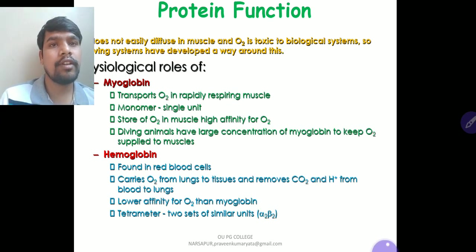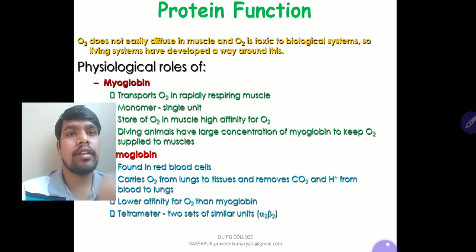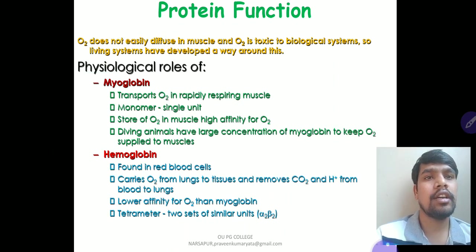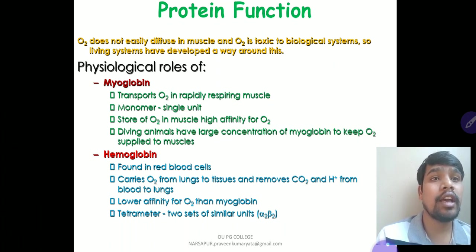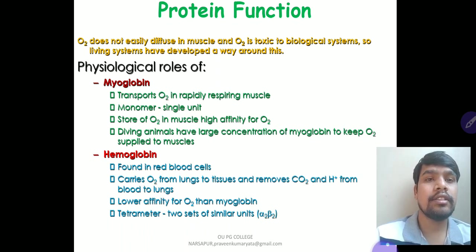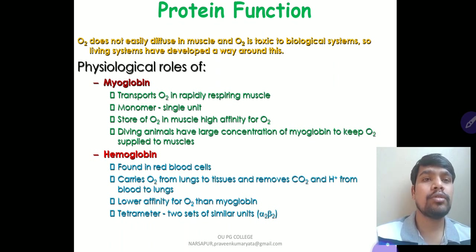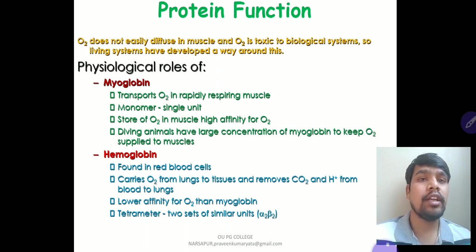Regarding protein function: O2 does not easily diffuse in muscle, and O2 can be toxic to biological systems. Living systems have developed physiological roles for hemoglobin and myoglobin to handle this. Myoglobin is not a transport molecule — it stores O2 rapidly in muscle. It is a monomeric, single-unit protein with a high affinity for O2. Diving animals have large concentrations of myoglobin to keep O2 supplied to muscle.